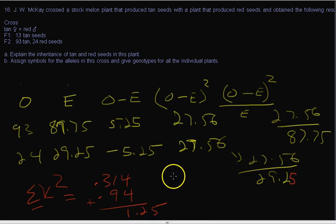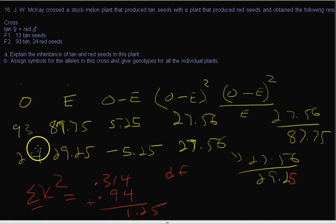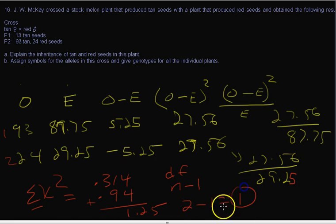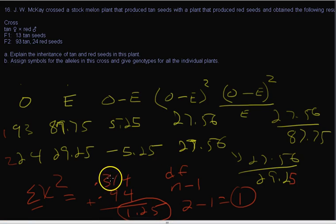A chi-square number alone doesn't tell us anything yet — we need to convert it to a p-value, and for that we also need the degrees of freedom. Degrees of freedom equals the number of categories minus one. In our case, we have two categories, so degrees of freedom equals 2 minus 1, which equals 1. So: degrees of freedom = 1, chi-square value = 1.25.